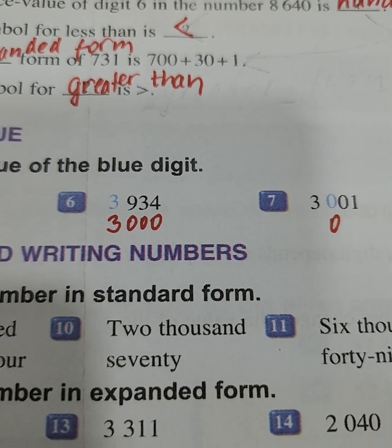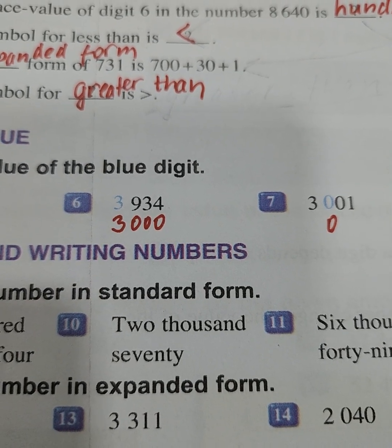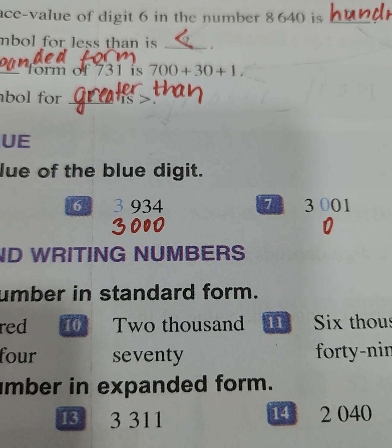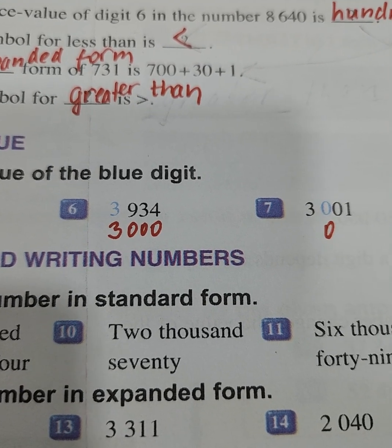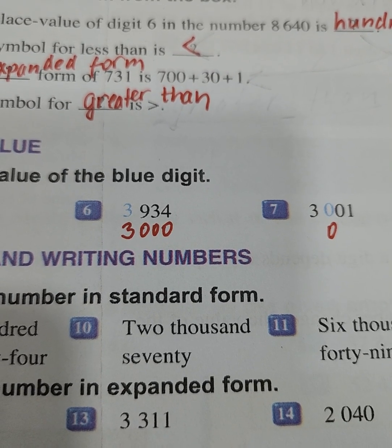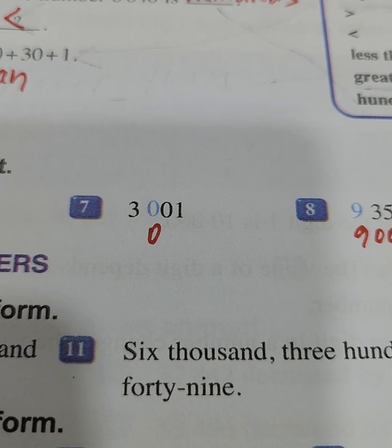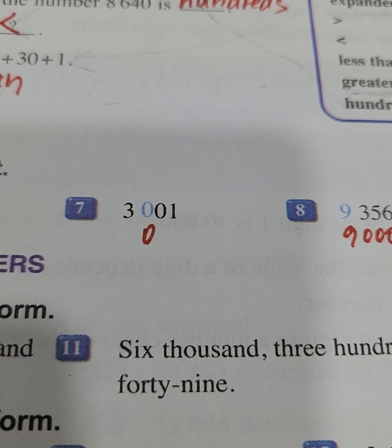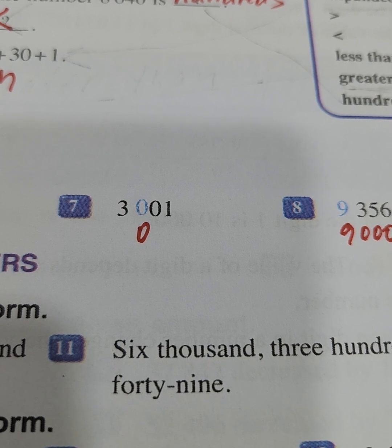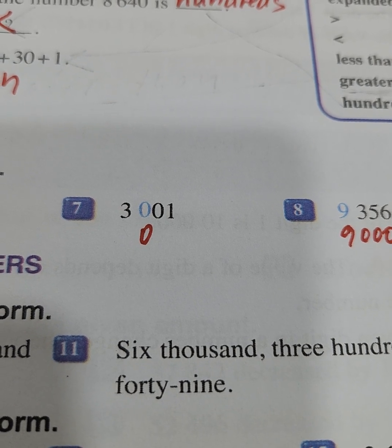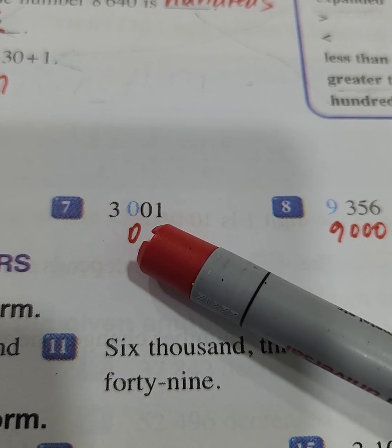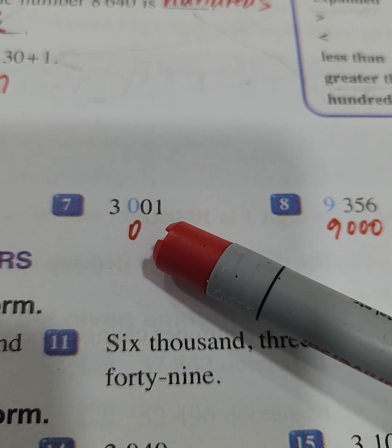After, we have 3934. The value of the blue digit is 3000 and we are in the place of thousands. Here we have the number 3001. The value of the blue digit is zero.